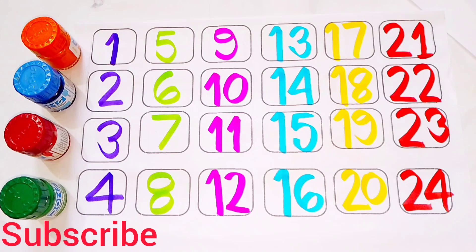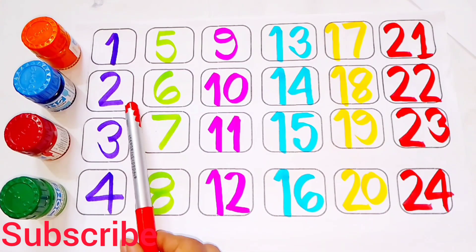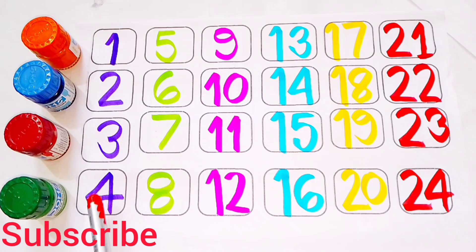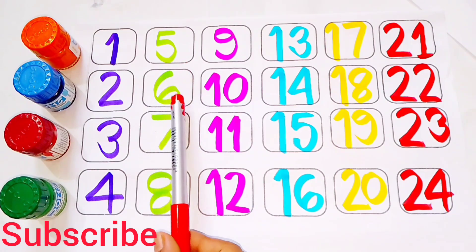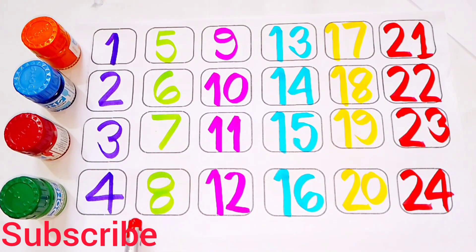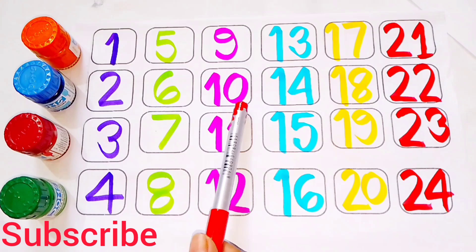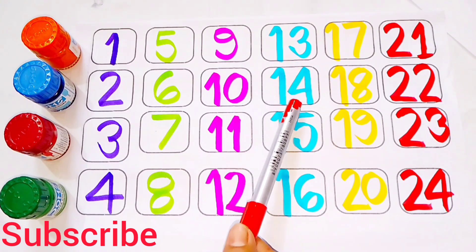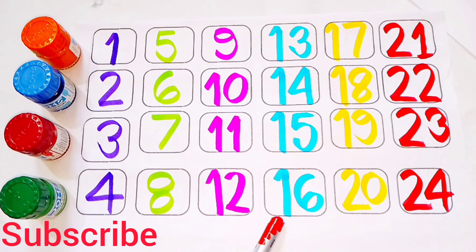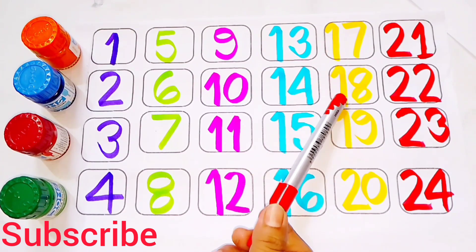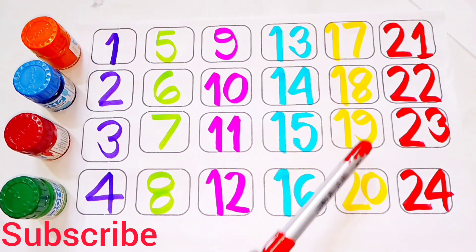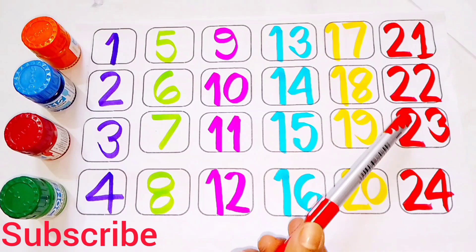Counting numbers 1, 2, 24. 1, 2, 3, 4, 5, 6, 7, 8, 9, 10, 11, 12, 13, 14, 15, 16, 17, 18, 19, 20, 21, 22, 23, 24.